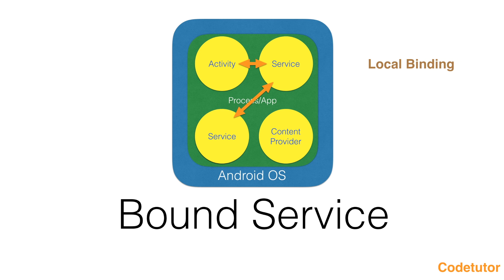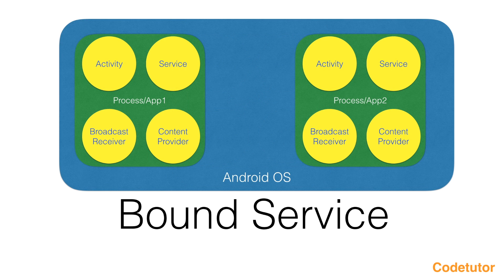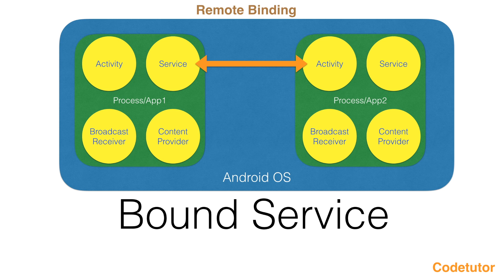But there may arise a situation wherein there might be two apps and an activity of one app may try to establish a connection with the service of another app. Though Android official documentation doesn't use this term, just to differentiate between the different concepts I will be talking about, I shall use the term remote binding — because the service which will provide the necessary information to the component binding to it is not part of the same app; rather it is a different app and a completely different process.